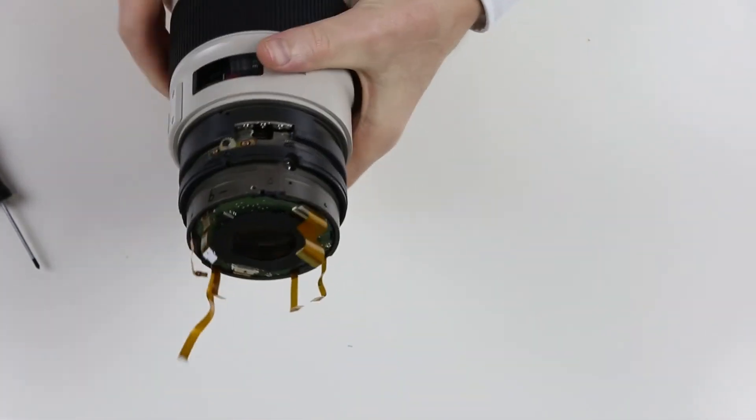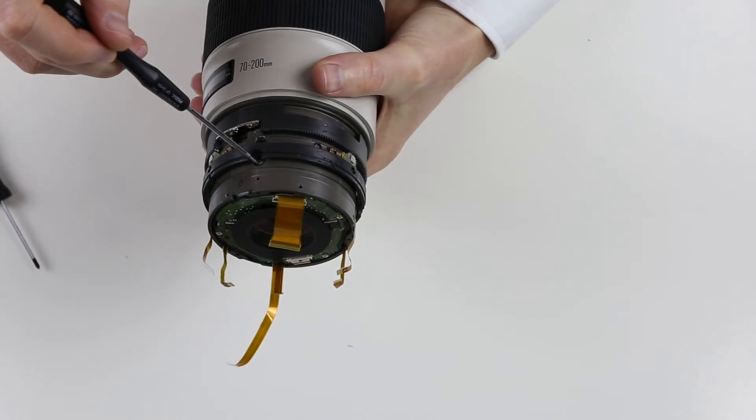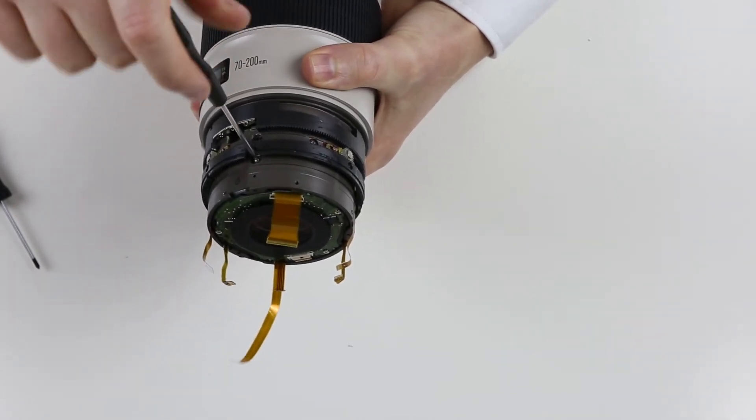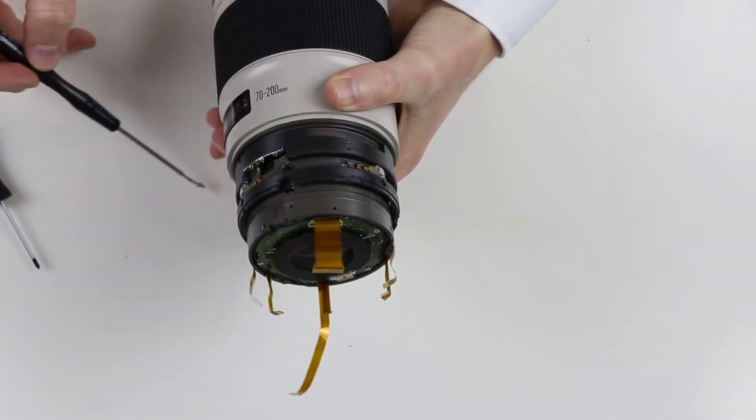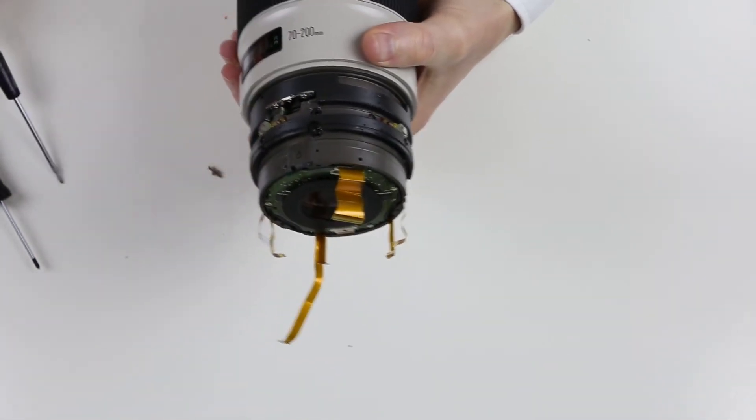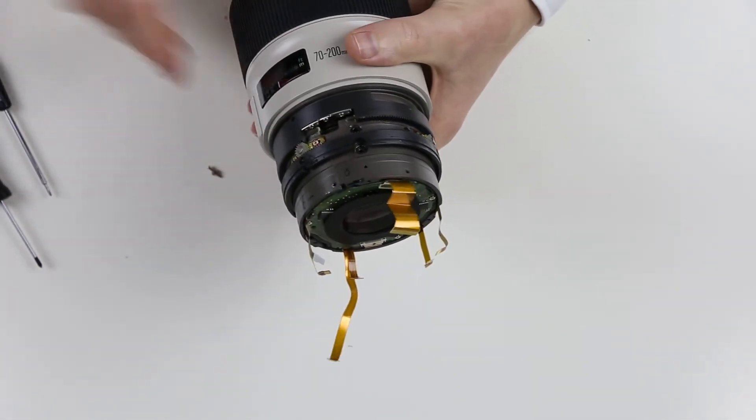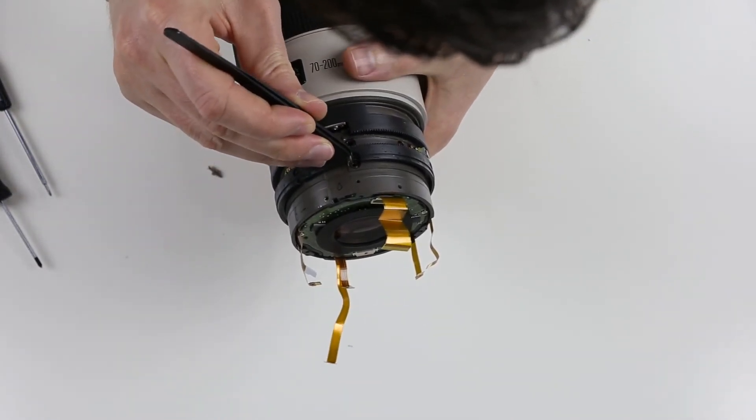Now we have access to the image stabilization module. Remove the three screws, bearing and metal ring which are holding it. Keep in mind that the inner and outer side of the removed elements are different, so you have to install them back at the same order and their correct side when you assemble the lens.